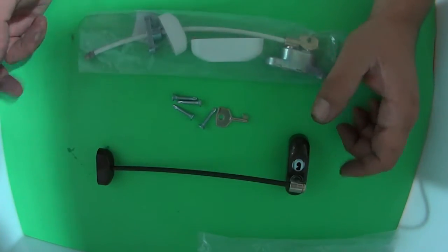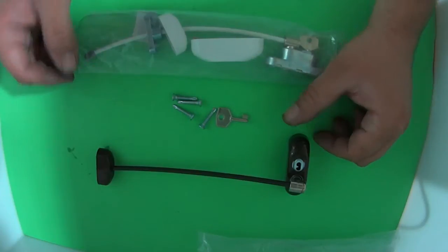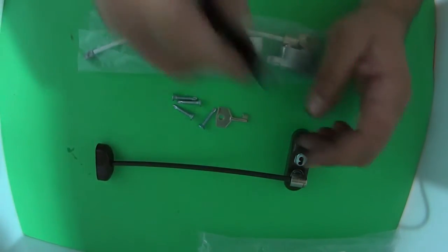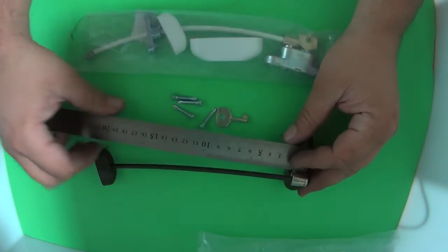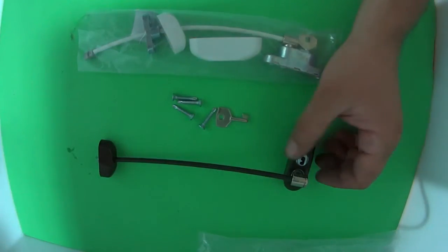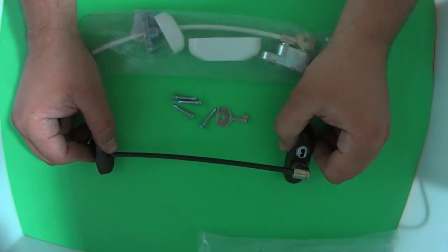This particular one is excellent because it's very quick and easy to install and restricts the window from being able to be open too much. The span on this right here, if I can show you, you'd be looking at about 200. So it'll allow the window to open 200, but not far enough for a child or so to fall out.